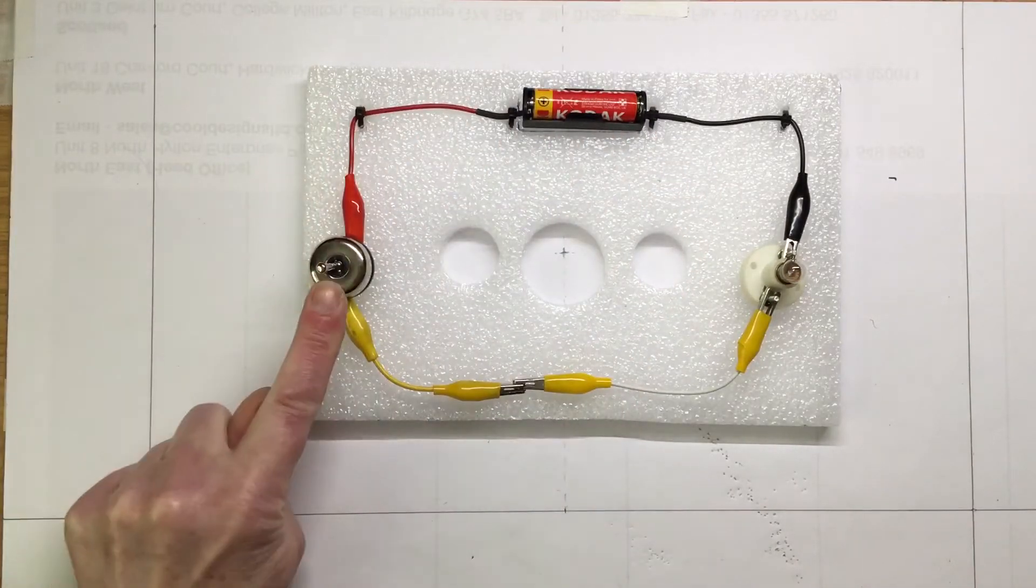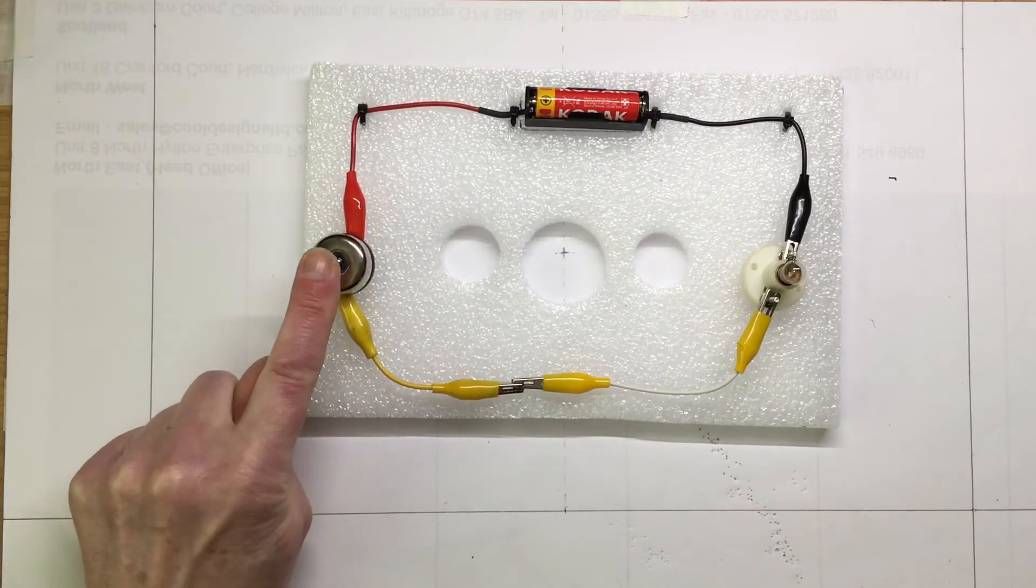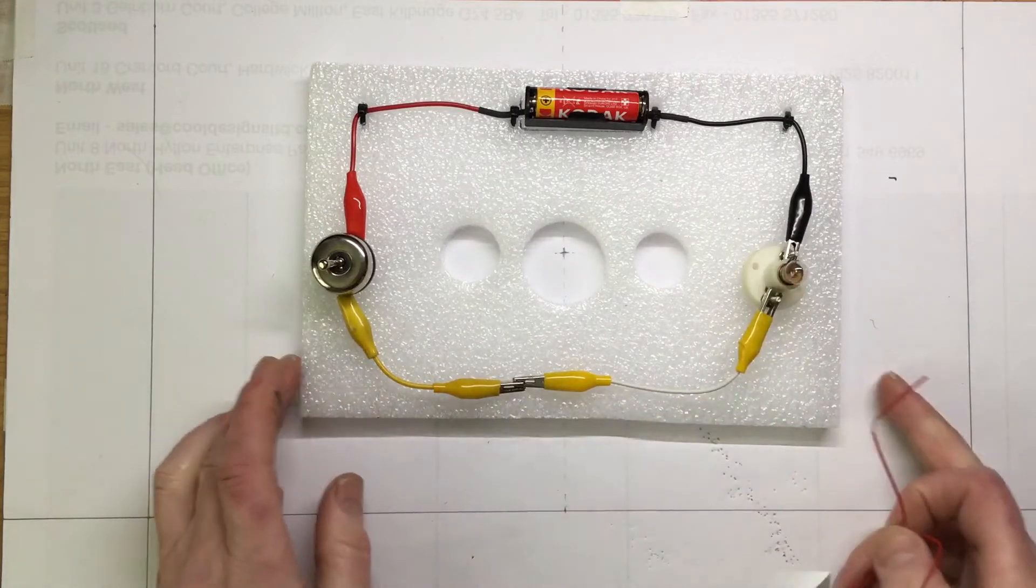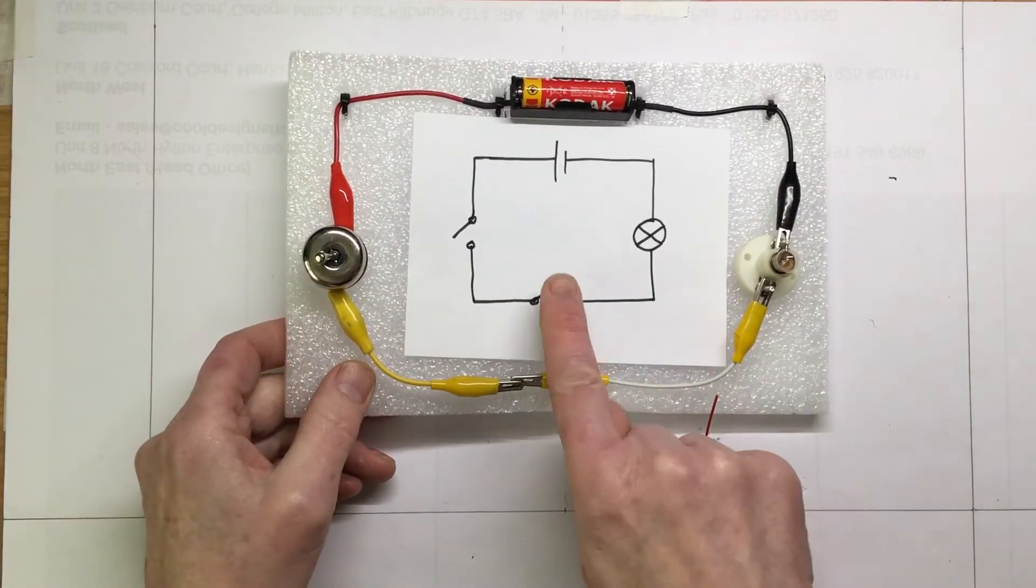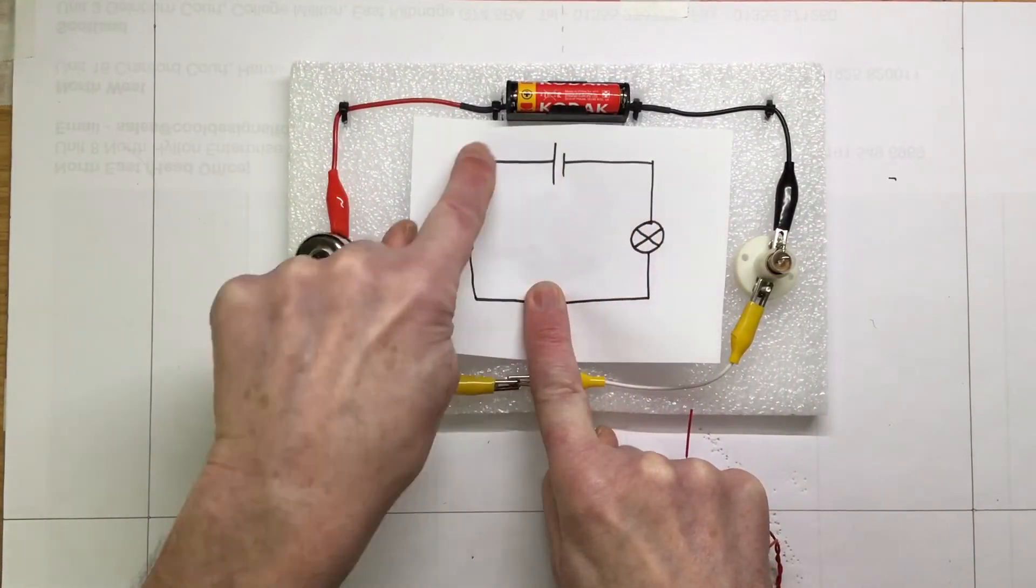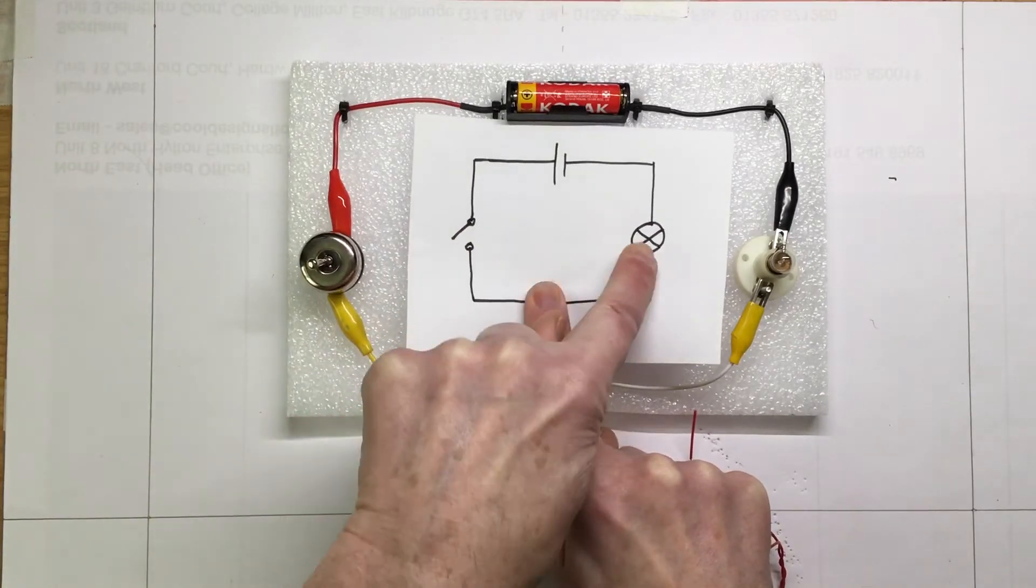So that's a very simple switch circuit. Let's focus on the switch - operate the switch, the bulb will light up, and we've seen that circuit diagram lots of times before. That's the simple switch controlling the lamp.